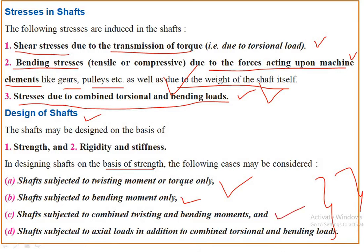The third case is when the shaft is simultaneously subjected to twisting and bending moment — means torque and bending moment together, when there is induction of both torsional shear stress as well as bending stress. That is combined twisting and bending moment. So these are the three major criteria on the basis of strength: when shaft is subjected to twisting moment only, when shaft is subjected to bending moment only, and when shaft is subjected to combined twisting and bending moments.